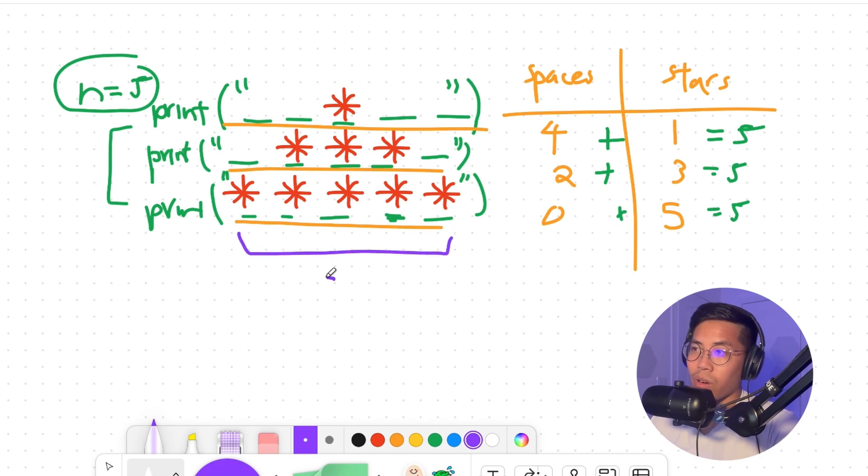So basically, on each row, there are five characters in total. So now this gives us an equation where spaces plus star equals n. And one thing you should also know, as we go down each row, we basically add two stars.